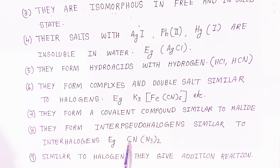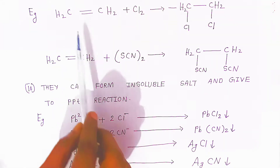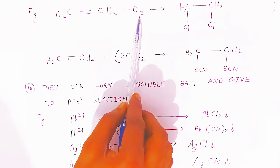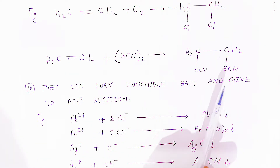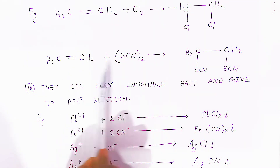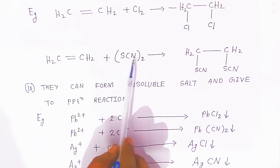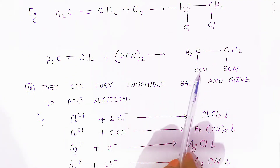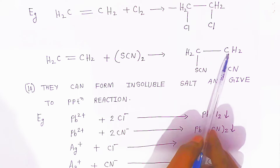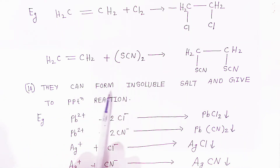Here is an example: ethene combines with chlorine gas to form 1,2-dichloroethane. When combined with thiocyanide, the double bond becomes a single bond and the two thiocyanide groups attach to carbon 1 and carbon 2.